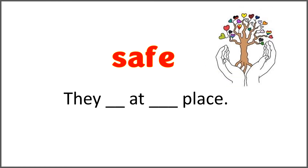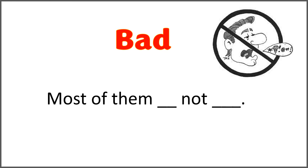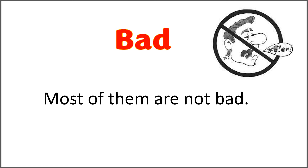The given word is 'safe' and the question is 'they blank at blank place.' Use 'safe' with 'are' to complete this sentence. They are at a safe place. The given word is 'bad' and the sentence is 'most of them blank not blank.' Use the word 'bad' with 'are' to complete this sentence. Most of them are not bad.